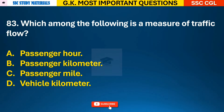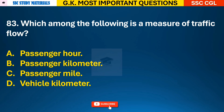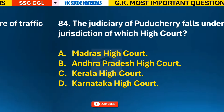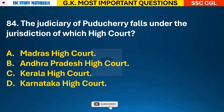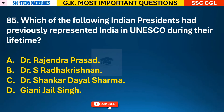Question 83: Which among the following is a measure of traffic flow? Answer D - Vehicle Kilometre. Question 84: The judiciary of Puducherry falls under the jurisdiction of which High Court? Answer A - it falls under the Madras High Court.